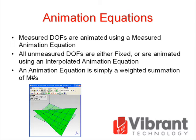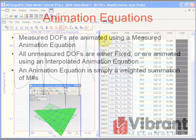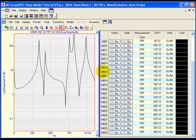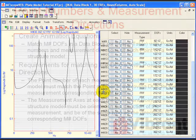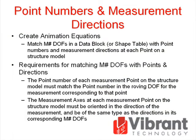All animation in the structure window is done by evaluating an animation equation for each DOF of the structure model. Measured DOFs are animated using a measured animation equation. All unmeasured DOFs are either fixed or are animated using an interpolated animation equation. An animation equation is simply a weighted summation of measurement numbers. During animation, each DOF of the structure model is animated by evaluating its animation equation and summing together weighted data from each measurement number in the current animation source. In the DataBlock window, each row in the Traces spreadsheet contains the properties of a single trace. Notice that the first column of the Traces spreadsheet contains the measurement number of the trace; each trace has a unique measurement number, which is its row number in the spreadsheet.